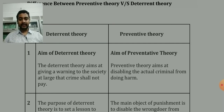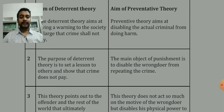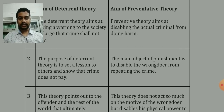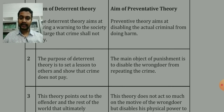The second point: the purpose of deterrent theory is to set a lesson for others and show that crime does not pay. The main object of preventive punishment is to disable the wrongdoer from repeating the crime. In deterrent theory, the public at large is targeted so that they don't commit crime. In preventive theory, the focus is on how to disable the actual criminal so that that particular person cannot commit crime again in society.